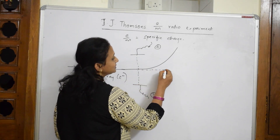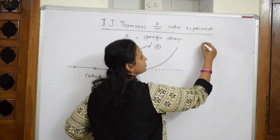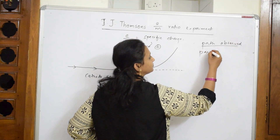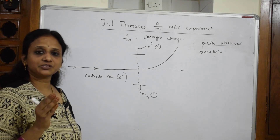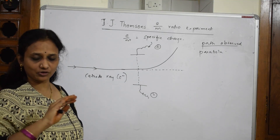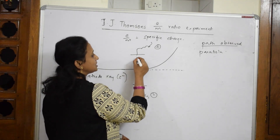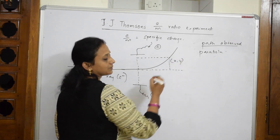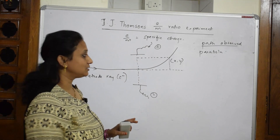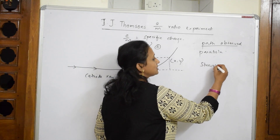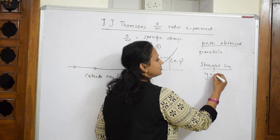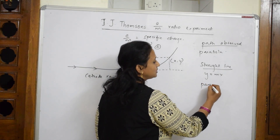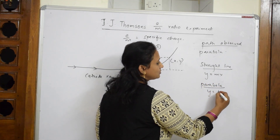Let us draw a coordinate axis here. The first important thing to remember is that the path observed is a parabola. It has a coordinate axis with two coordinates. For a straight line, the equation is y = mx. But this is not a straight line — this is a parabola. So, for a parabola, y = a·k·x².